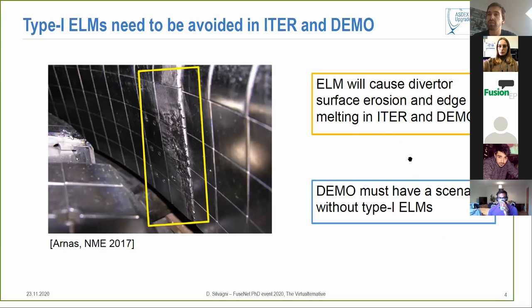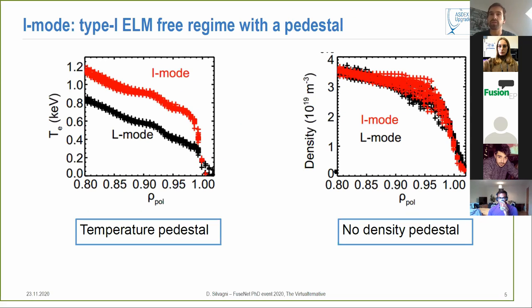Because for example in ITER this will cause surface erosion and edge melting as you can see here already in present-day machines. DEMO is for this reason looking for a scenario without type-1 ELMs. And for this reason we are studying also the I-mode confinement regime which is a scenario without any type-1 ELMs and with a pedestal. It has as you can see here a temperature pedestal in the plasma edge, but the density profile is like the one of L-mode so there is no density pedestal, and in this way we can reach high pressures without having type-1 ELMs.